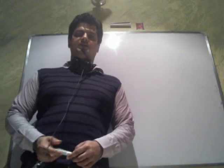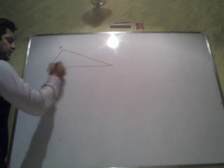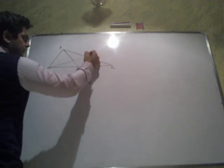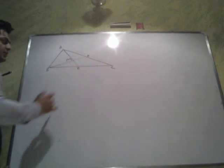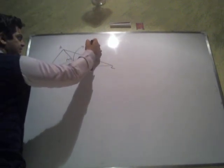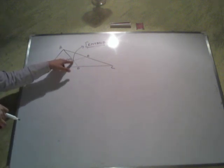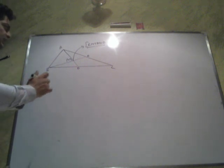Today we will be understanding why a centroid divides the median in a 2:1 ratio. For that, we need to draw a triangle — let it be A, B, and C. If AD and BE are the medians, this point M is the centroid, and we need to prove why this point always divides the median into a ratio of 2:1.